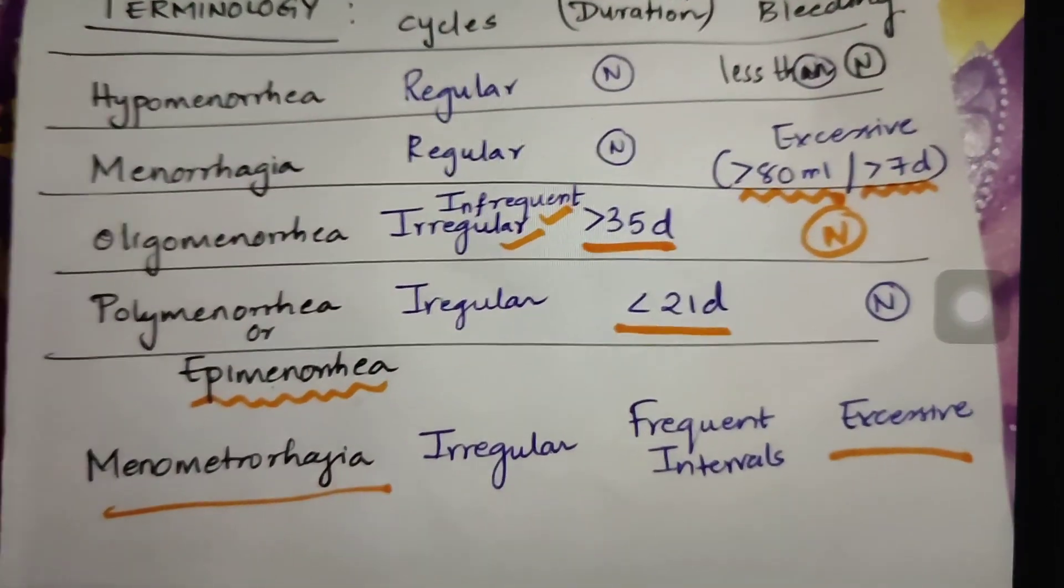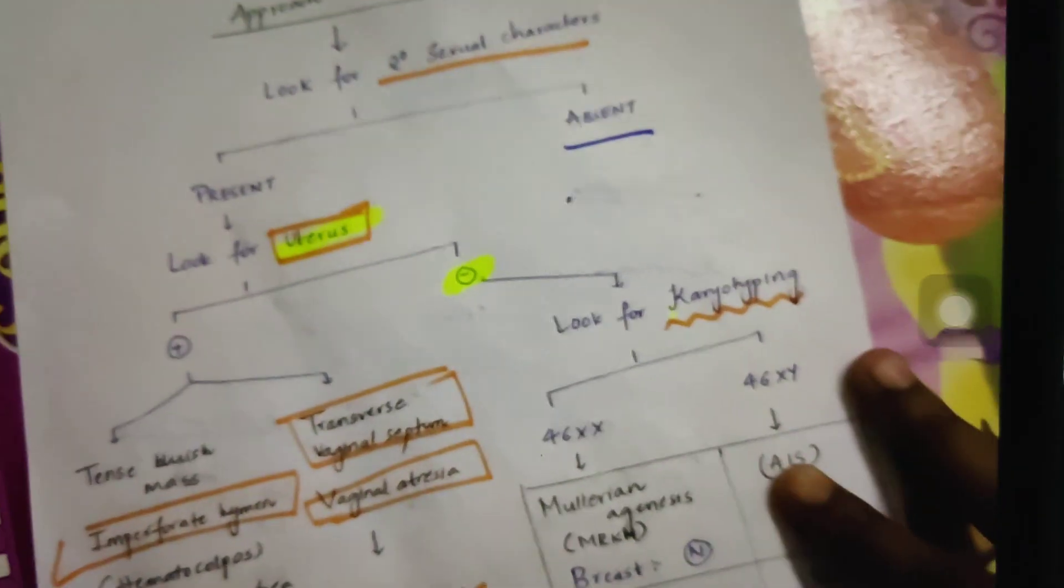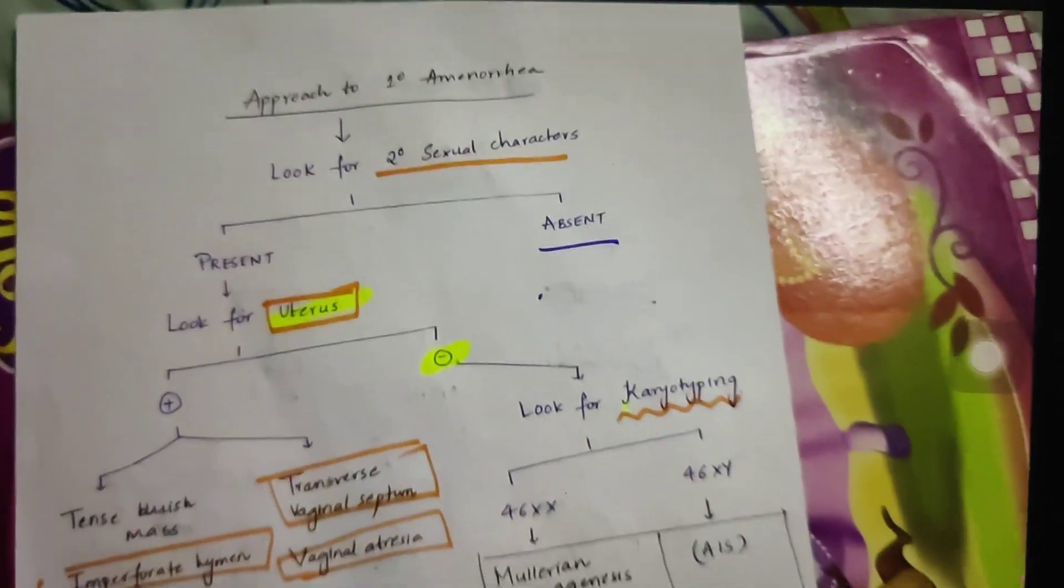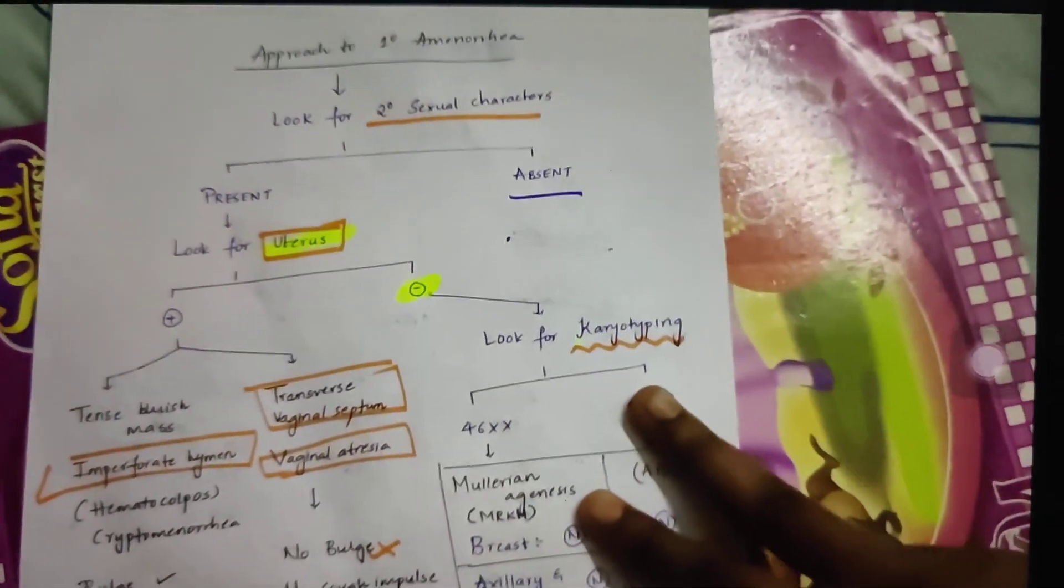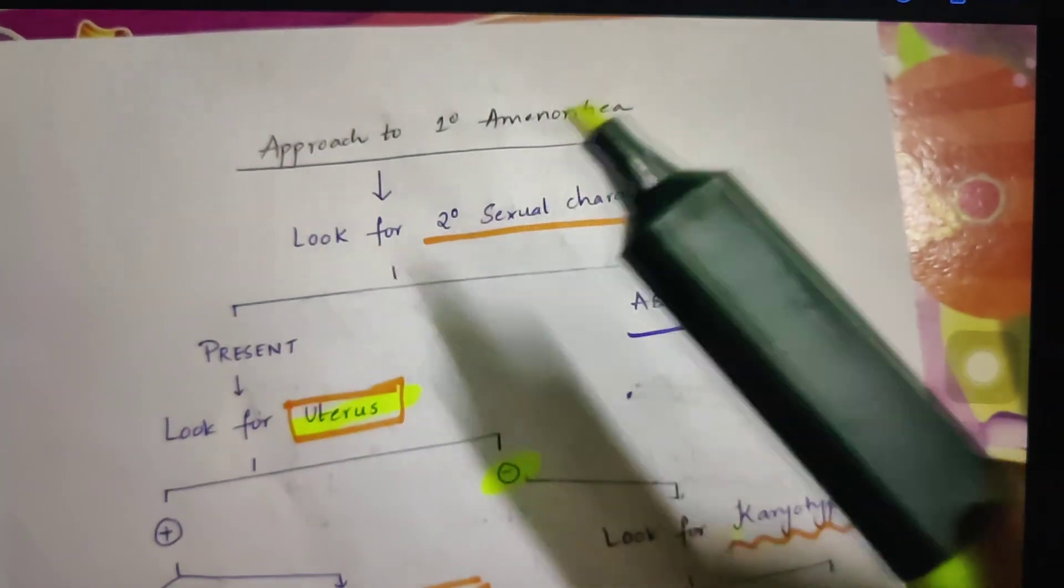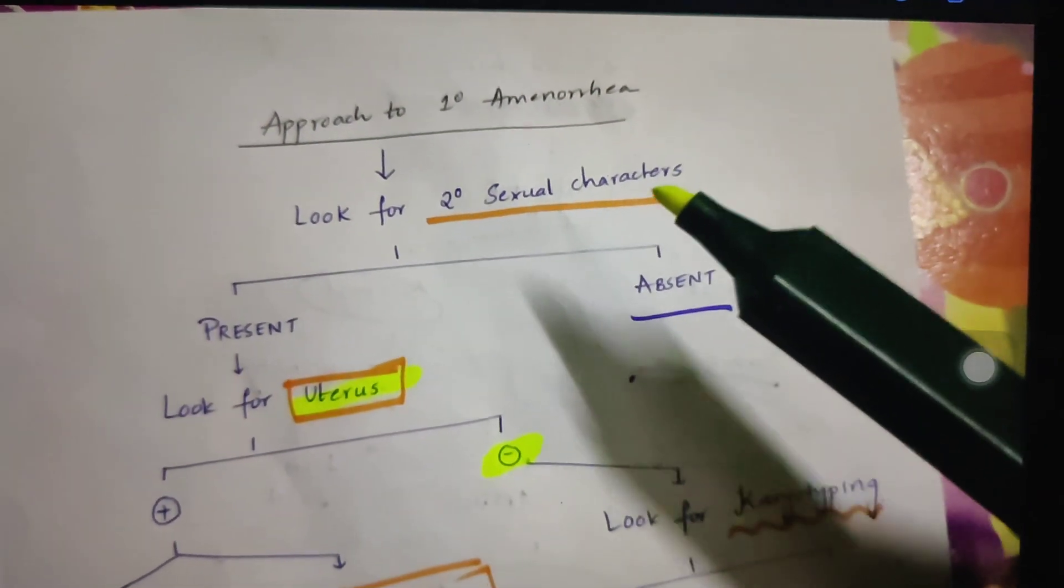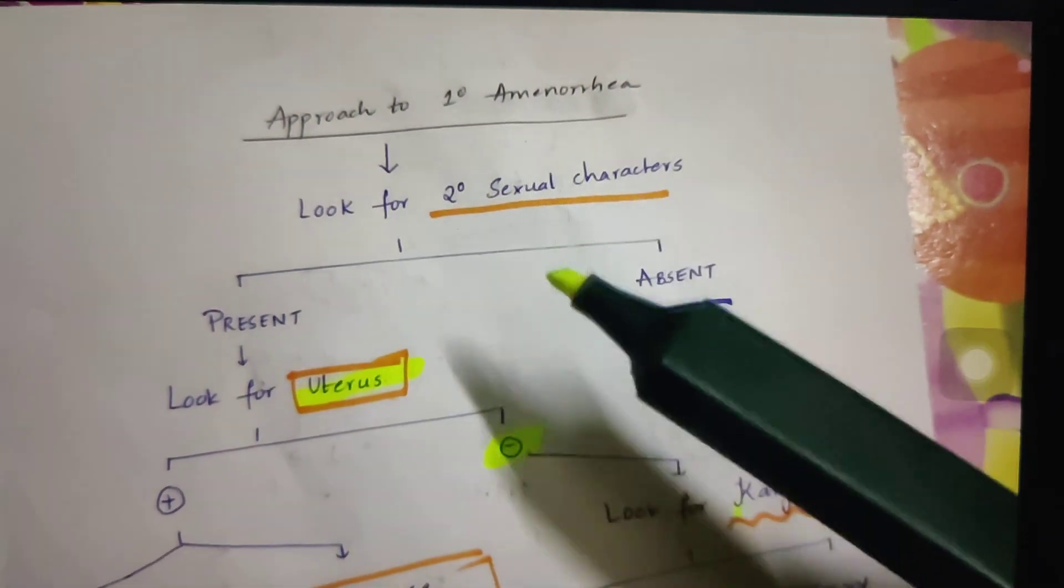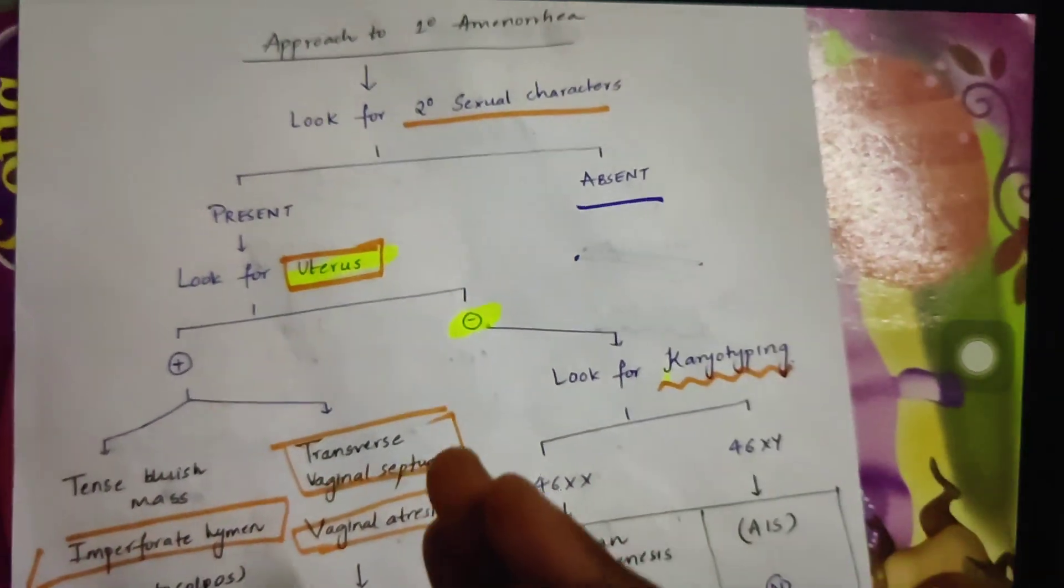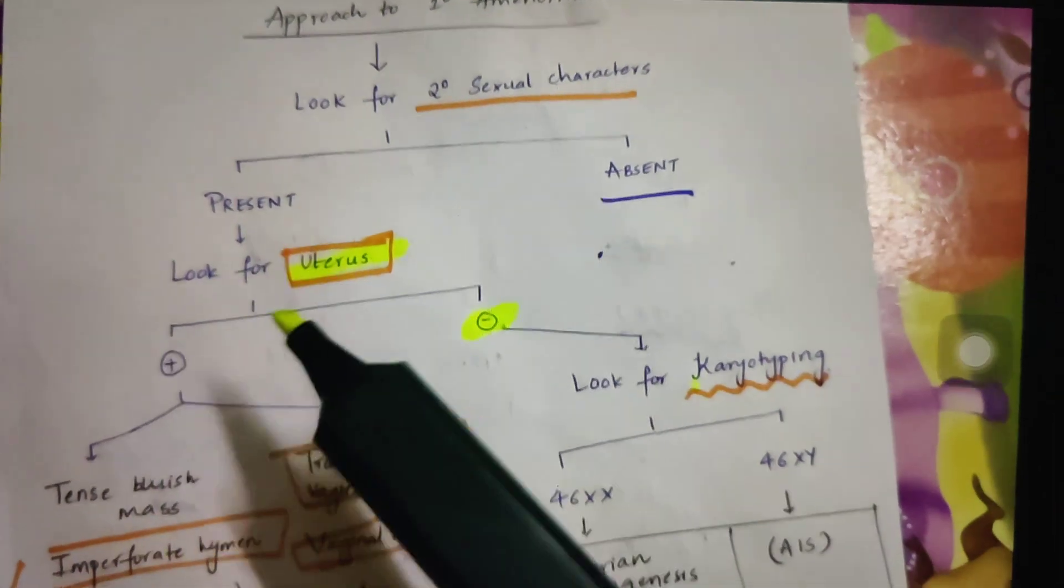Now let us get into the actual topic proper, which is approach to primary amenorrhea. Here is how it goes: approach to primary amenorrhea. I have written it in a tabular flowchart. Now let me try to explain this to you. First you need to look for the mention of secondary sexual characters in the question, whether the patient is having secondary sexual characteristics or not. This sheet explains you only half of the flowchart where the secondary sexual characteristics are present.